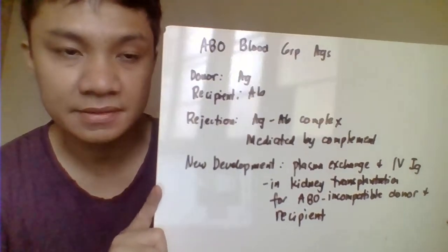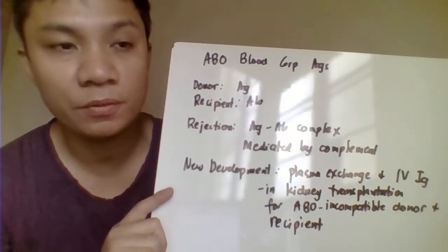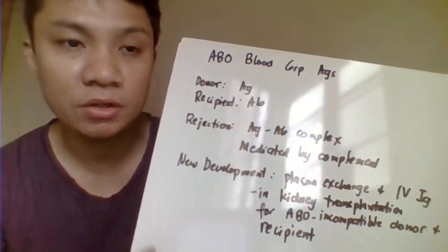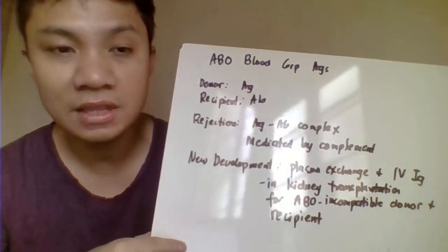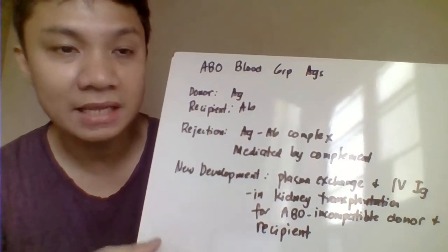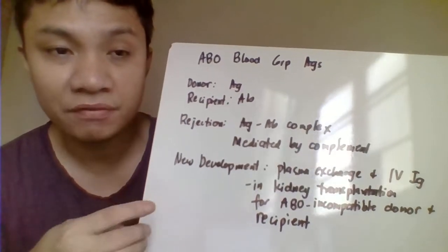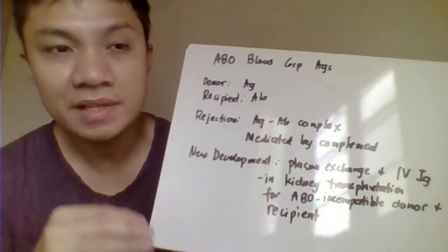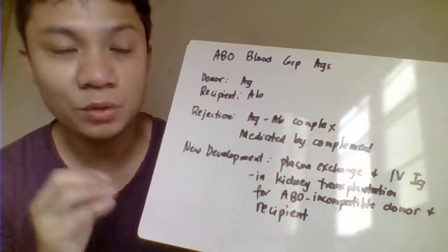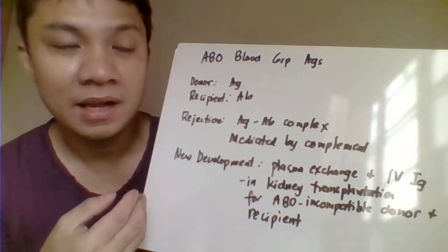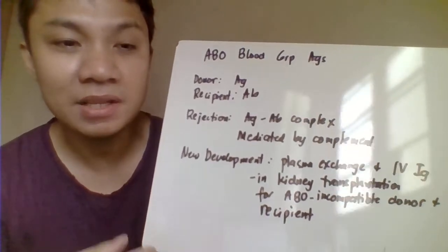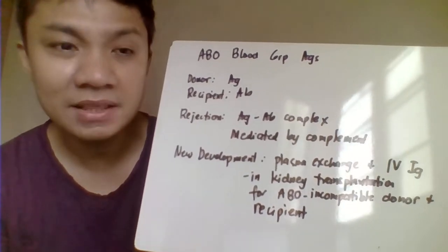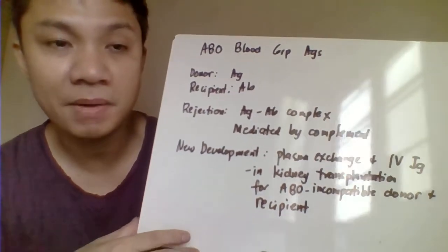Another consideration for successful transplantation is the ABO blood group antigens, which are highly immunogenic. The rule for compatibility between donor and recipient is that the recipient should not have an ABO blood group antibody directed towards the donor's red cell antigen. Always check the antibodies in the recipient, which should correspond to antigens lacking in the donor, in order to have compatibility between the donor and recipient.